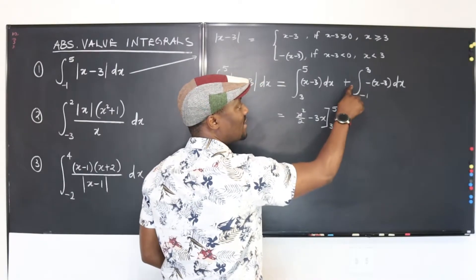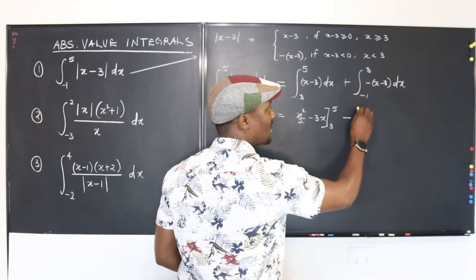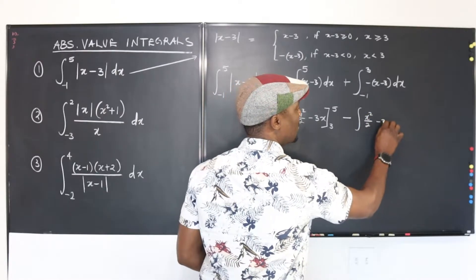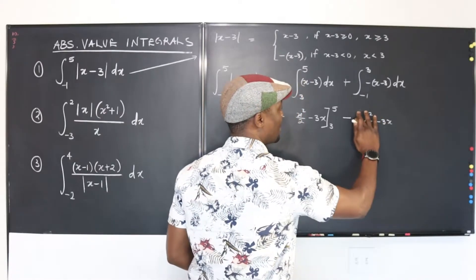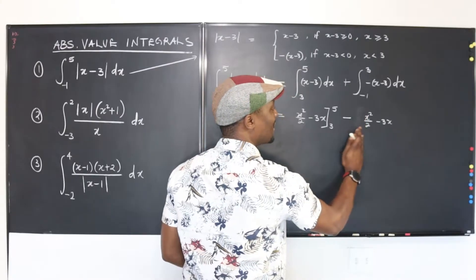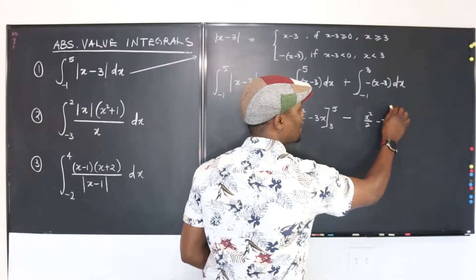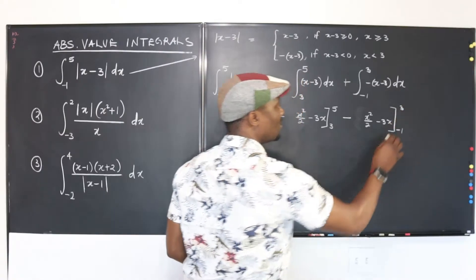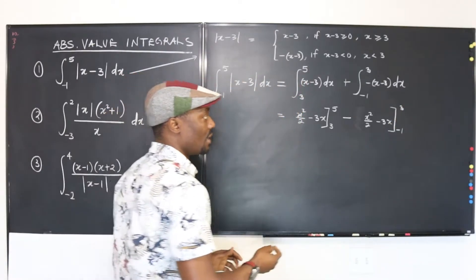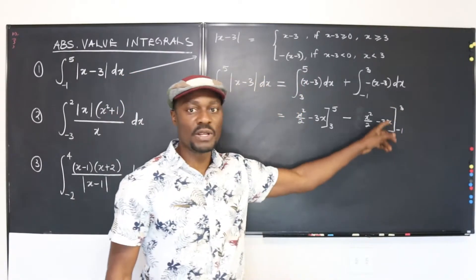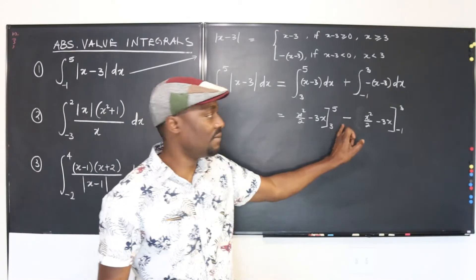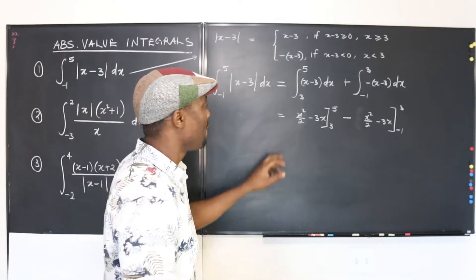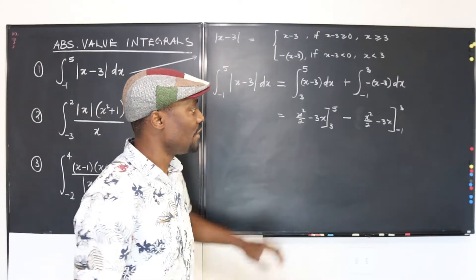I bring the negative sign out, so the second integral is x squared over 2 minus 3x, evaluated from negative 1 to 3. Remember, you don't need to add plus c because we're doing definite integrals — even if you did, the two c's would cancel out. So now we just need to evaluate.